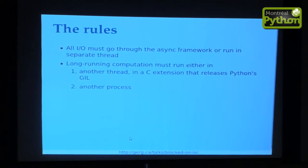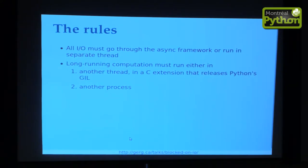The rules when you're using any asynchronous I/O framework are pretty simple. Rule number one: all I/O must go through the async framework, or it has to run in a separate thread. And then for long-running computation, you can do it in another thread, but you have to be aware of the global interpreter lock, which prevents two threads running Python bytecode concurrently. If you have another thread that runs code in a C extension and that C extension releases the GIL, you're fine — you'll get concurrency and won't block the event loop. If you can't satisfy those conditions, you have to do your long-running computation in another process.